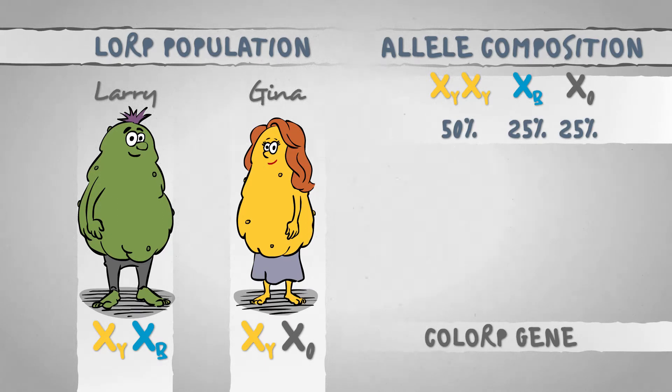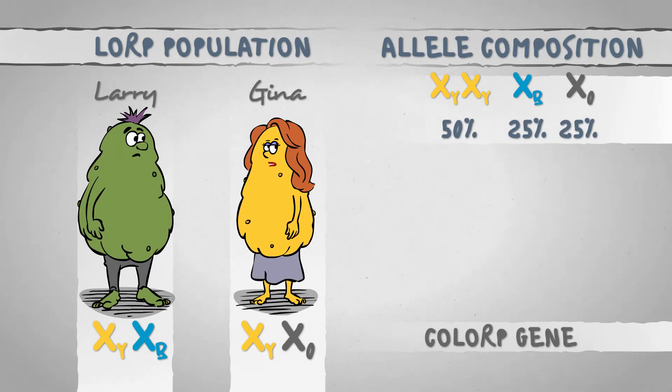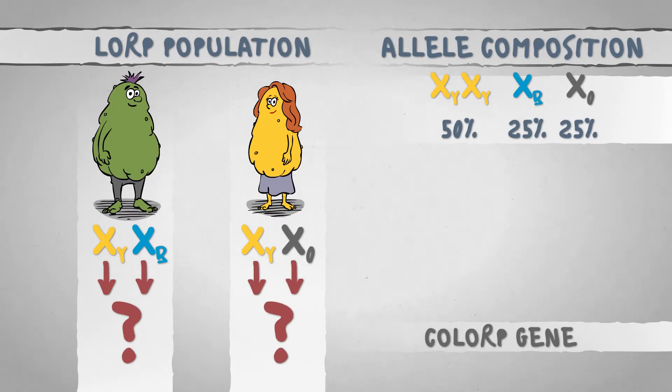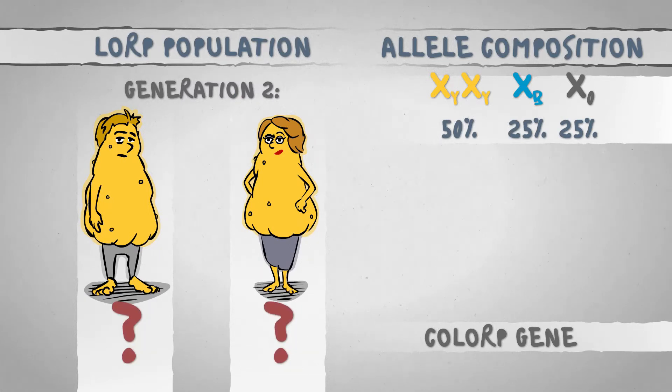Larry and Gina hate each other's guts. Unfortunately, the survival of the population depends on them, so they are willing to make sacrifices. Shall we get intimate? Yeah, I guess. Which one of their alleles they pass on is up to chance, so the next generation doesn't necessarily have the same genetic composition as the original one.